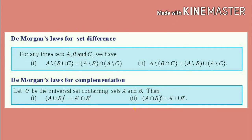First, we will see about De Morgan's laws for set difference. For any three sets A, B, and C, we have: A difference (B union C) is equal to (A difference B) intersection (A difference C). The second one is: A difference (B intersection C) is equal to (A difference B) union (A difference C).